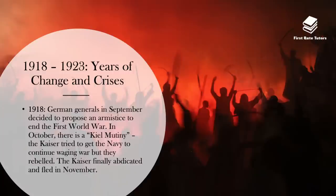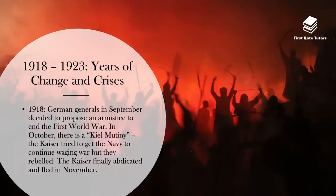So firstly, remember the First World War occurred in 1914 to 1918 and Germany under the Kaiser had entered to support Austria-Hungary. It had not started the war, but it had entered in support of Austria-Hungary and it was on the losing side. So in 1918, German generals in September decided to propose an armistice to end the First World War. In October, there was a Kiel mutiny in which the Kaiser tried to get the navy to continue waging war, but they rebelled.